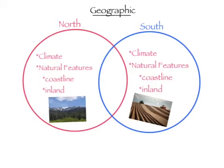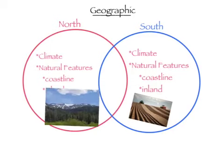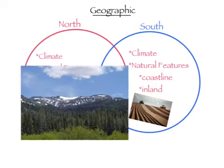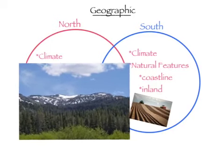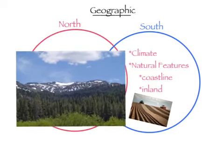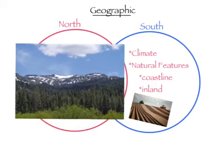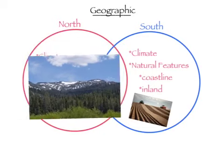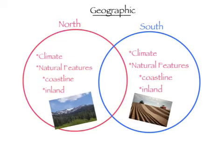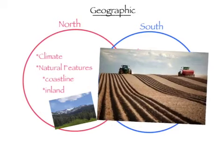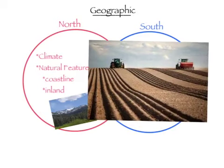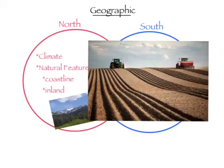Natural features in the inland of the North include rocky soil that makes farming hard, leading to a turn toward trade and craft, with timber used for shipbuilding. Natural features in the inland of the South include indigo, tobacco, and corn.